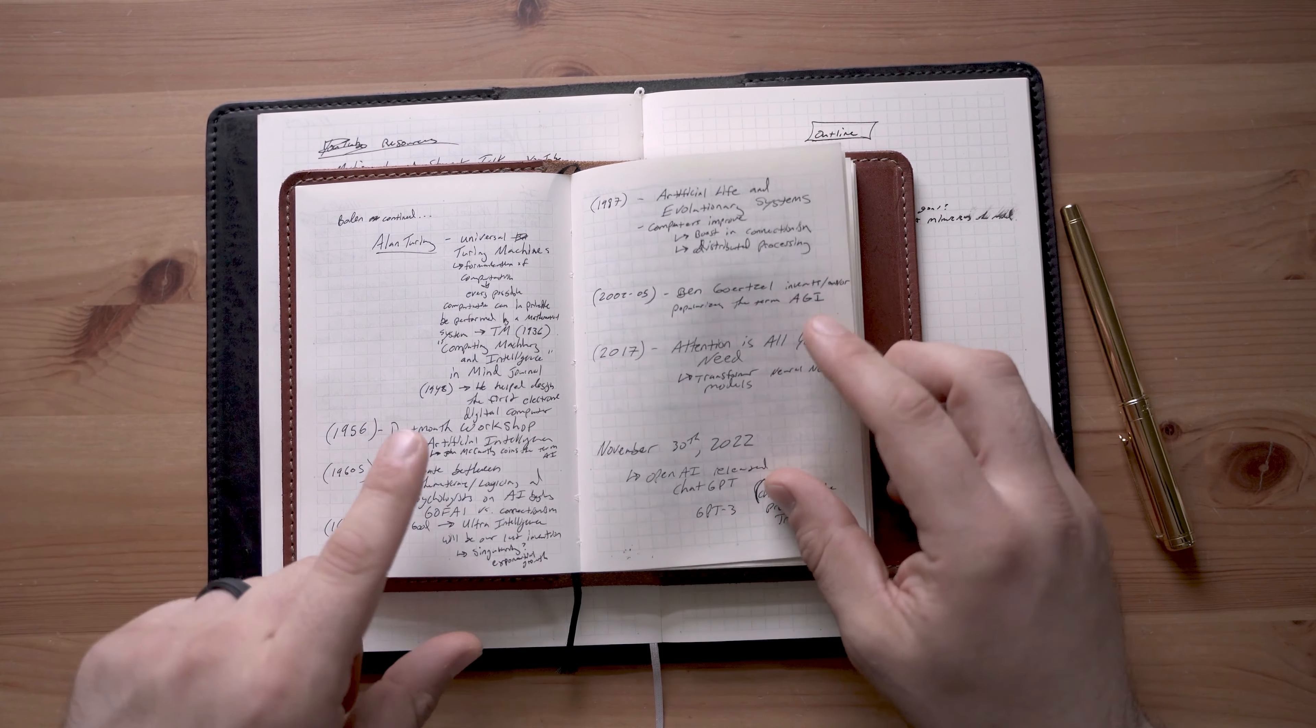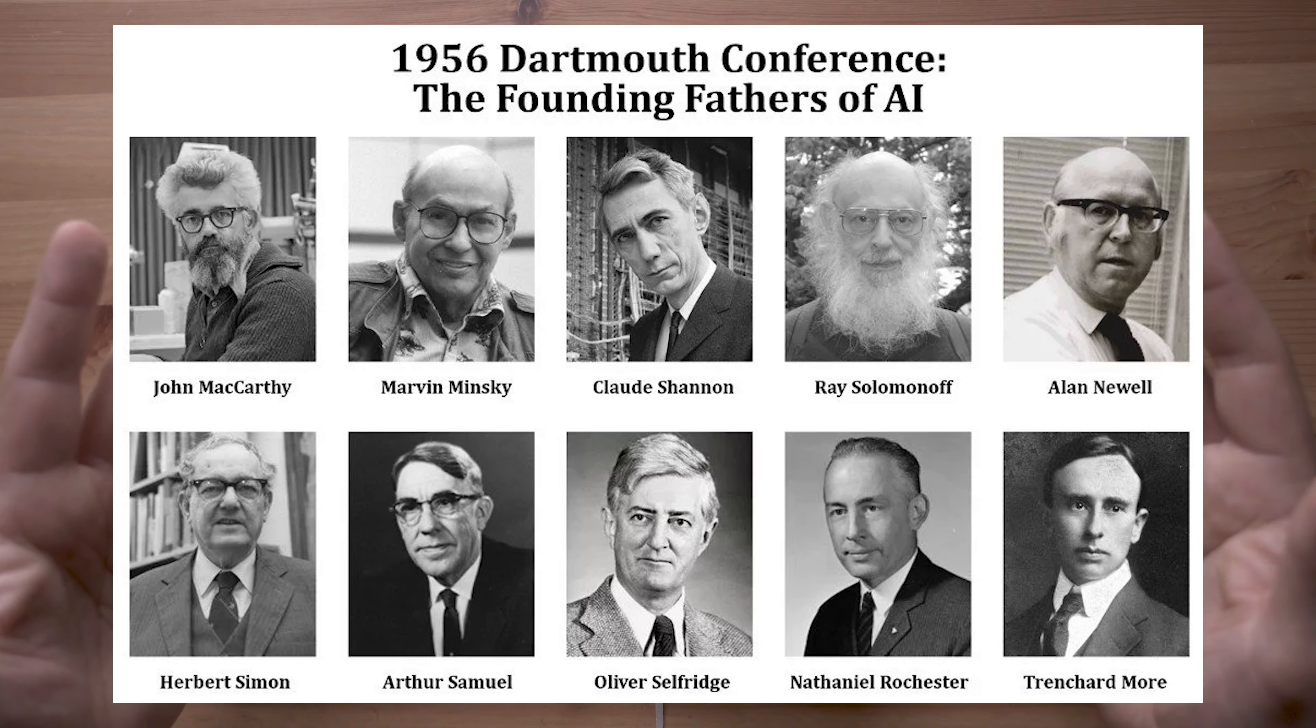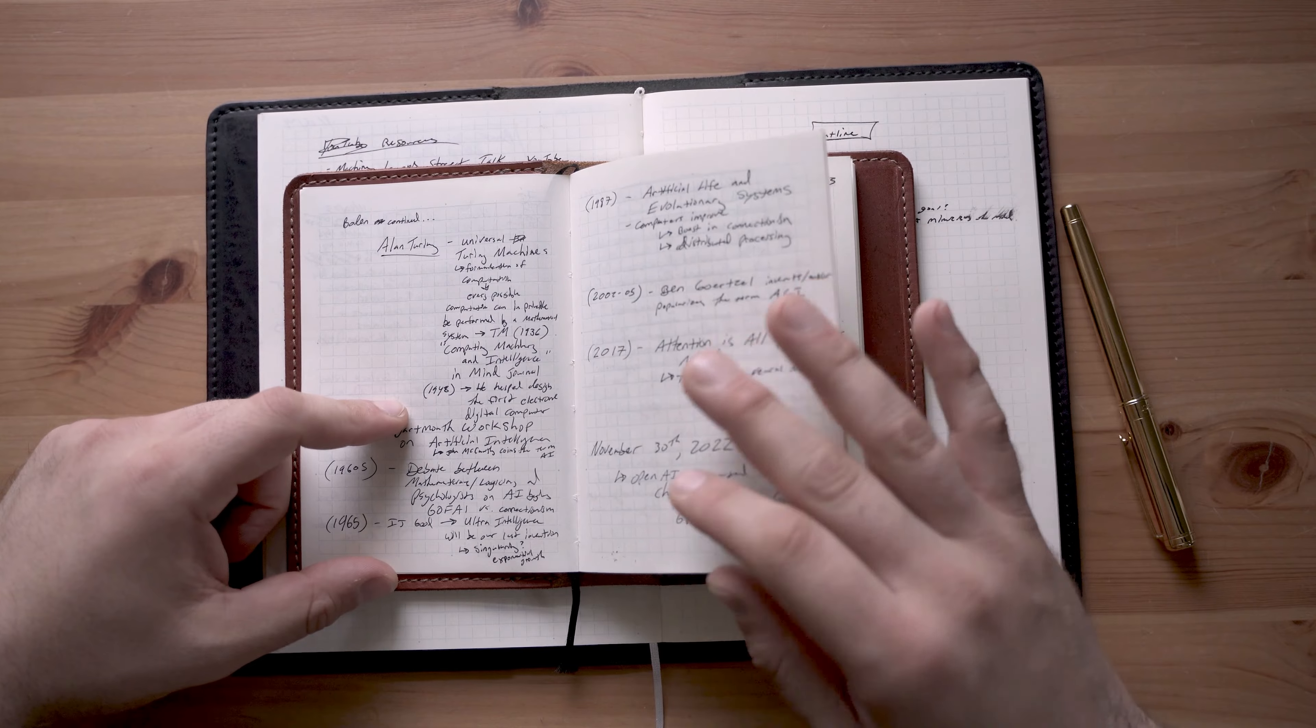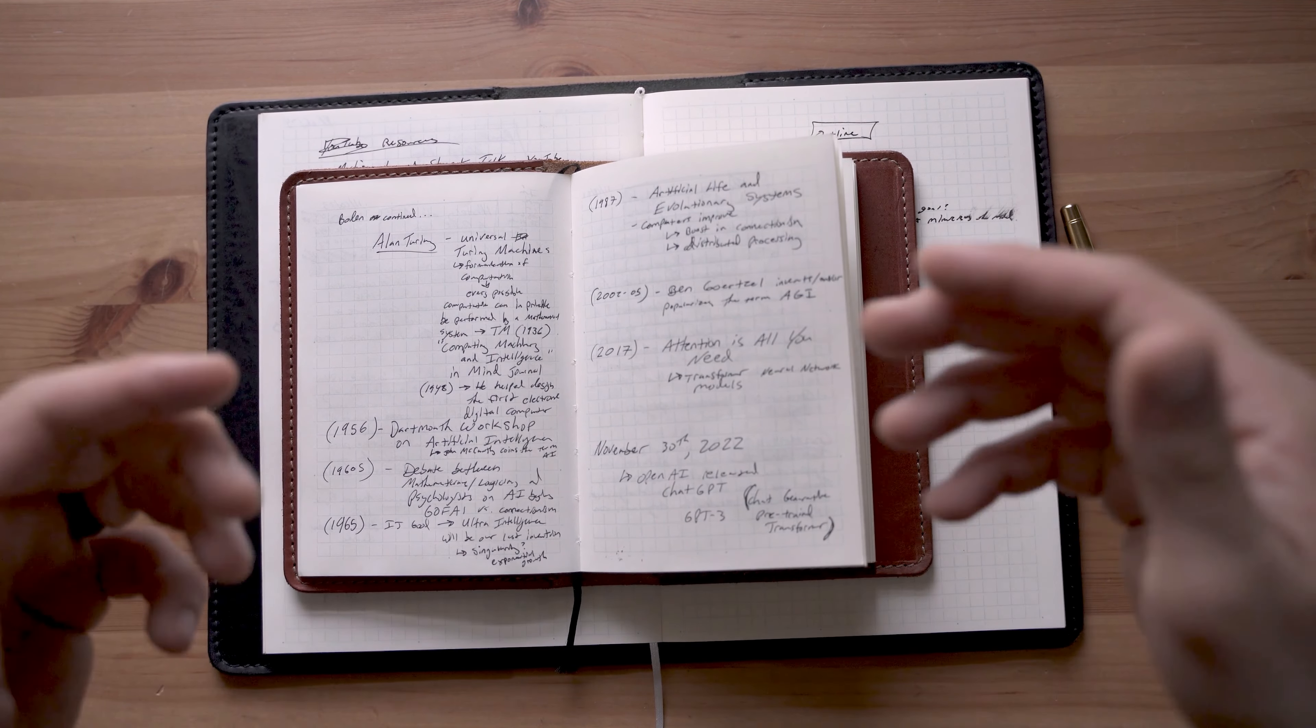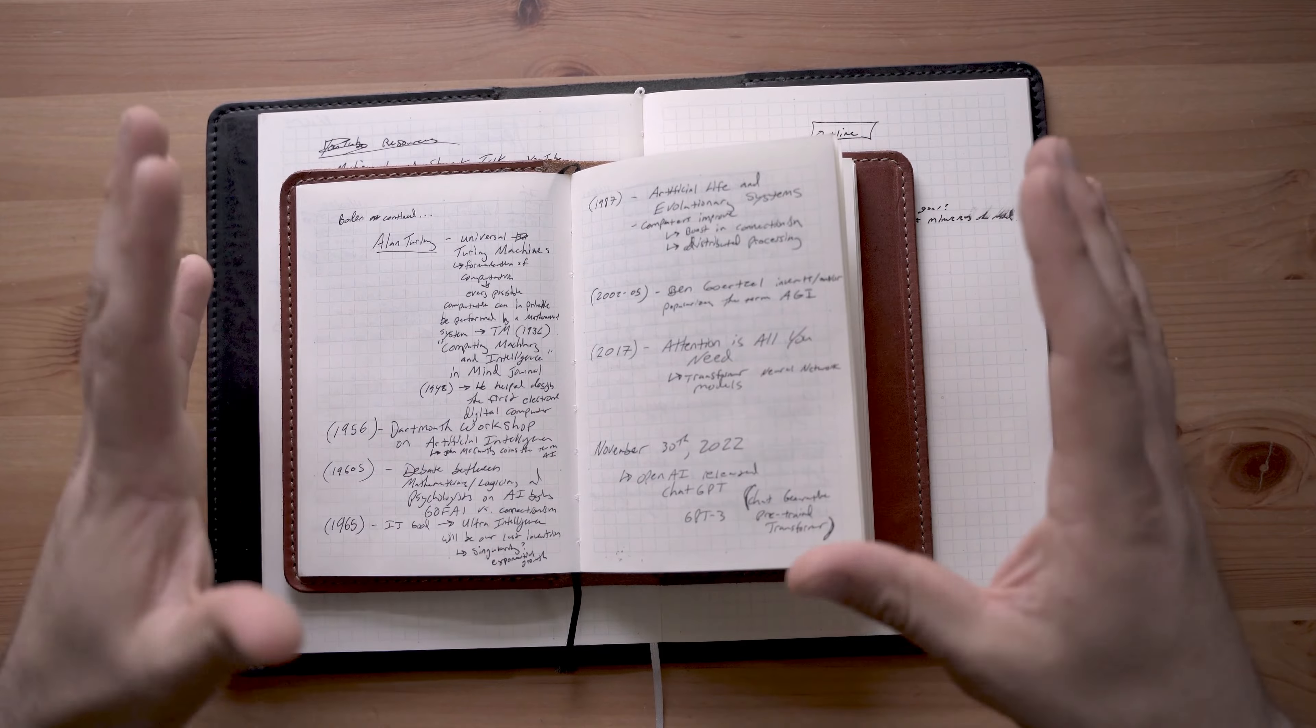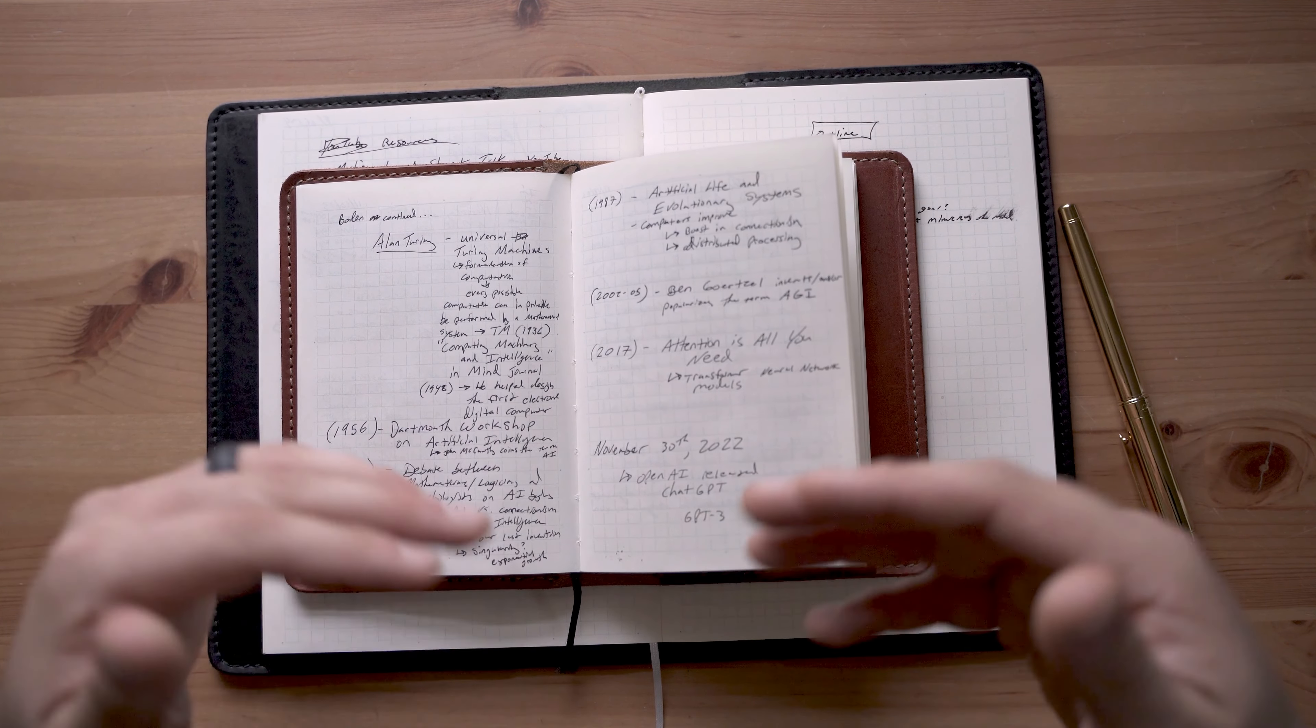Next up, we have the Dartmouth workshop. This was huge in 1956. It's actually where the term artificial intelligence was coined by John McCarthy. It used to be called computer simulation, which now has a totally different connotation and meaning and theory and all sorts of stuff. But the Dartmouth workshop, I think, was three months over the summer and it was meant to create artificial intelligence. People laugh at these scholars now because they wildly overestimated their abilities and underestimated how difficult the task actually would be.